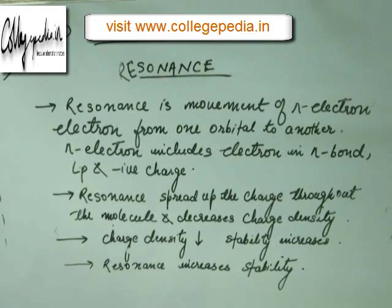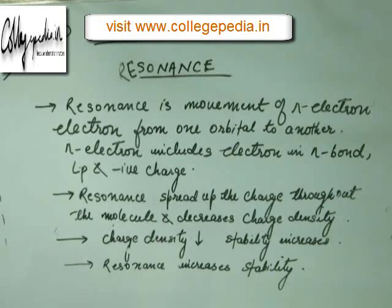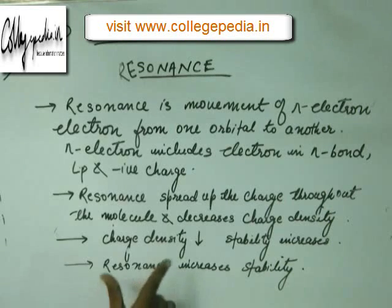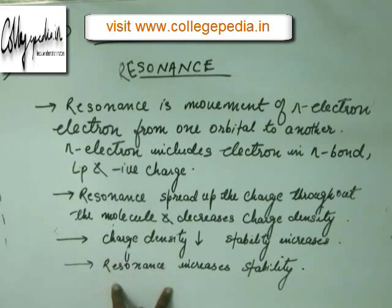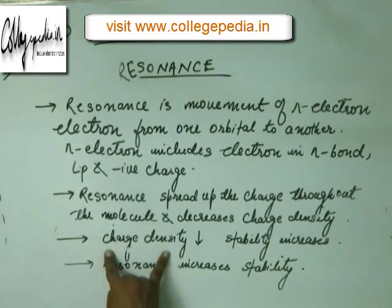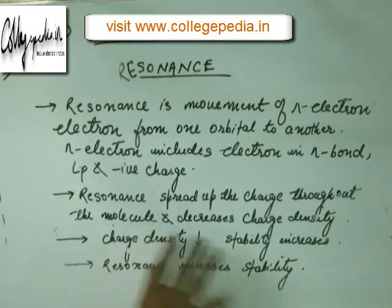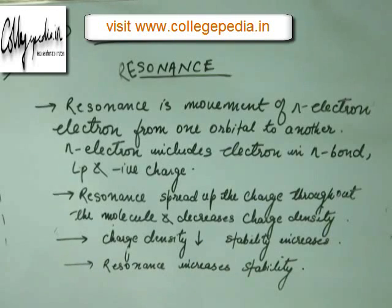There is one more way, apart from resonance, that decreases charge density — we will see that after studying resonance. But the key point is: when charge density decreases, stability increases, and resonance is one way of decreasing charge density by spreading the charge throughout the molecule.